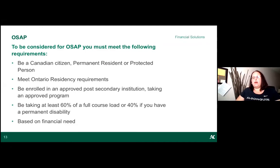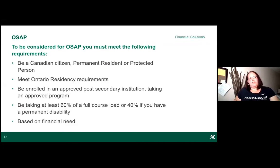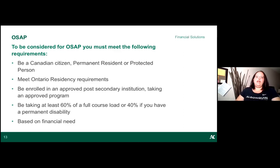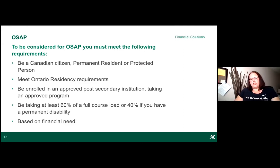To receive Ontario student loans, you must have lived in Ontario for 12 consecutive months without attending post-secondary school. If you came from another province, apply to that province's student assistance program. If you arrived from internationally three months ago, you still qualify for OSAP. For full-time funding you must be enrolled in 60% of your course load, or 40% if you have a registered disability. Funding is based on individual financial need, so amounts vary.